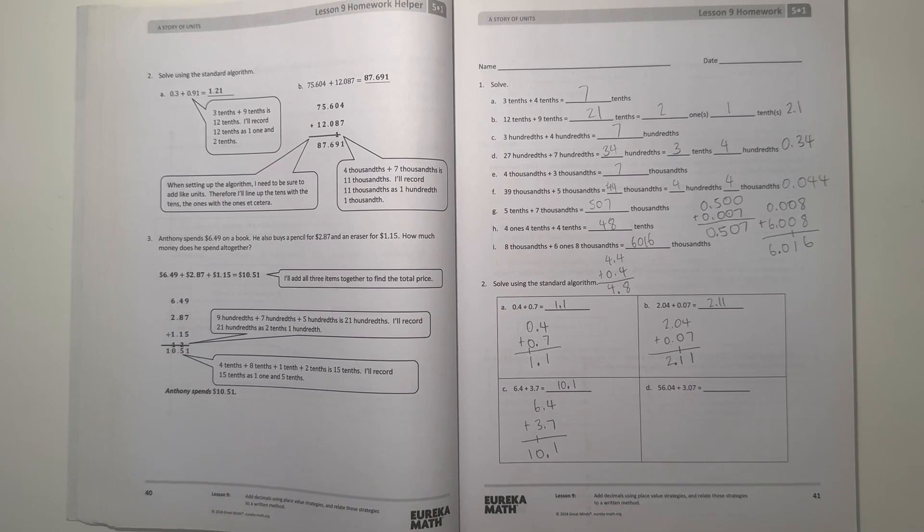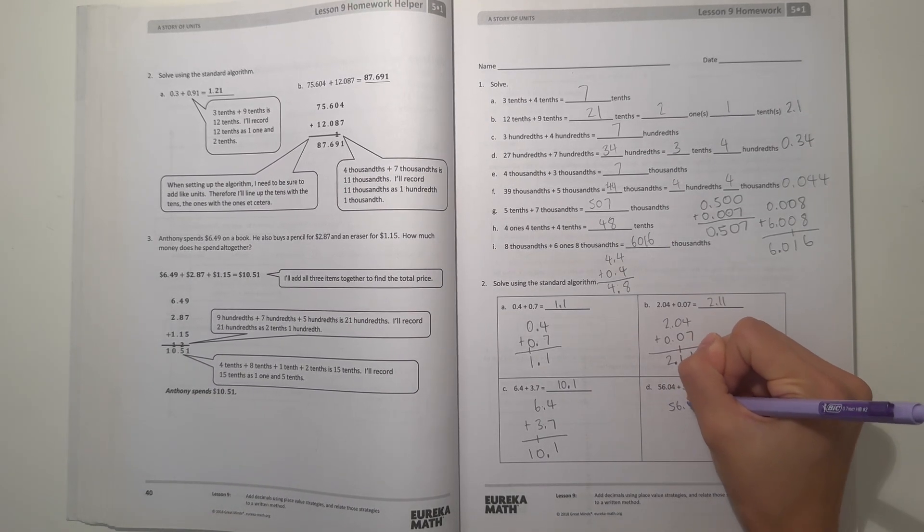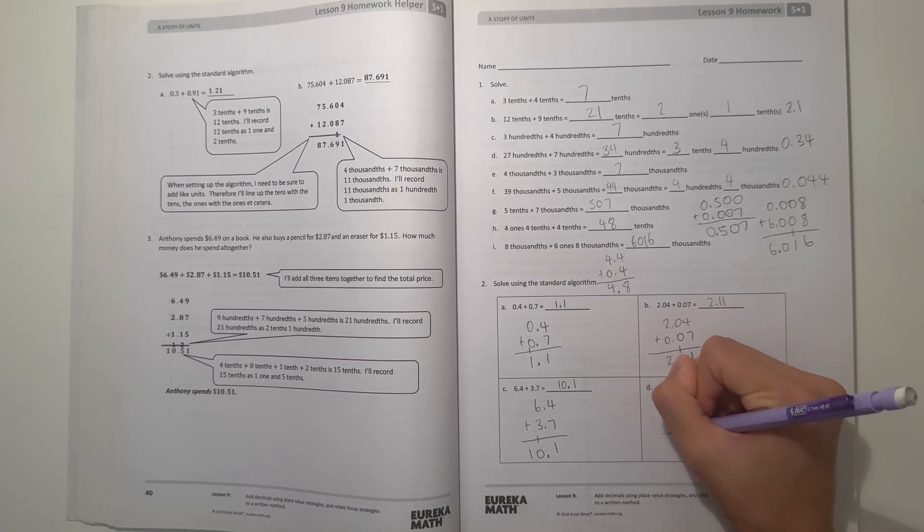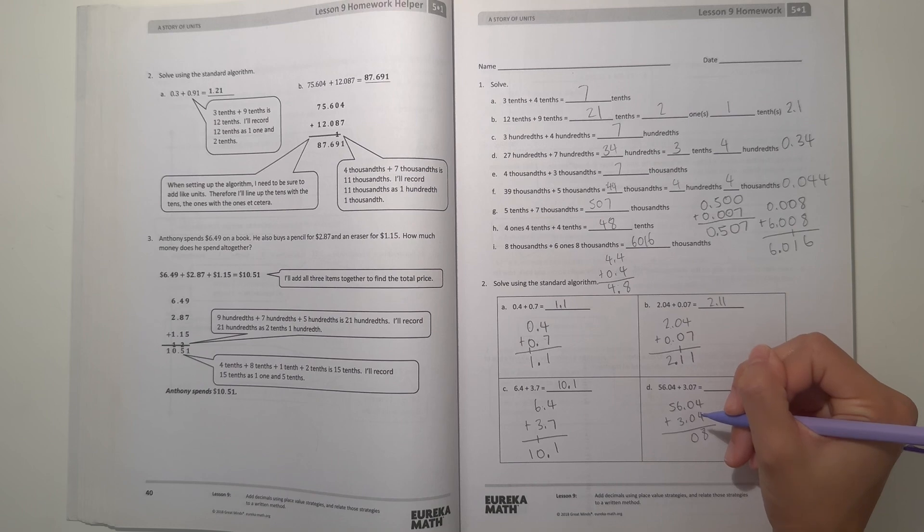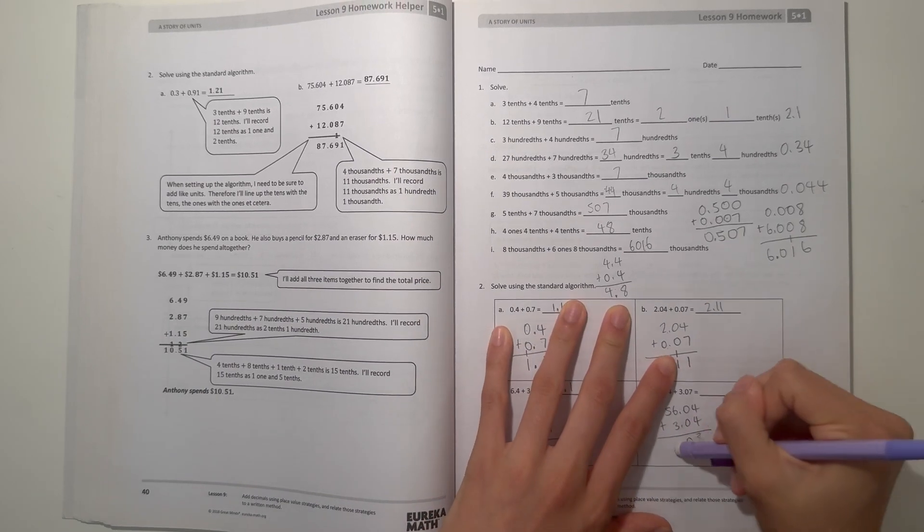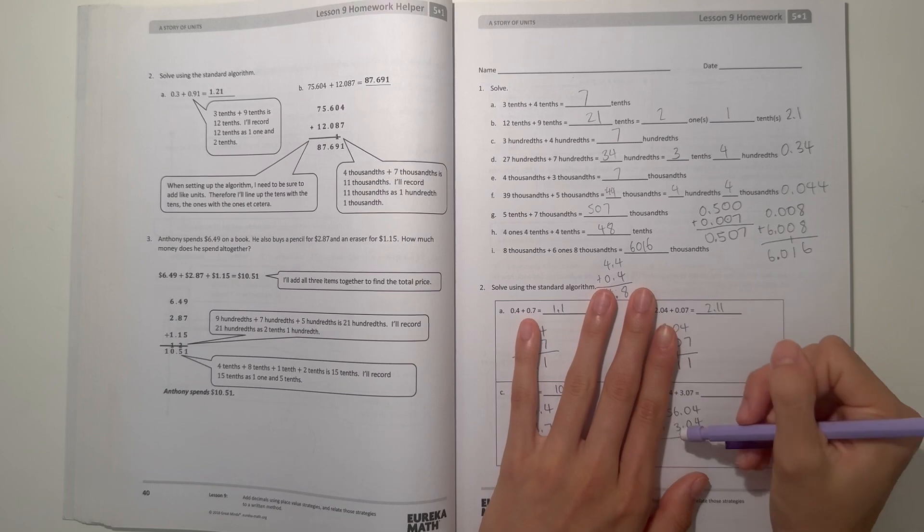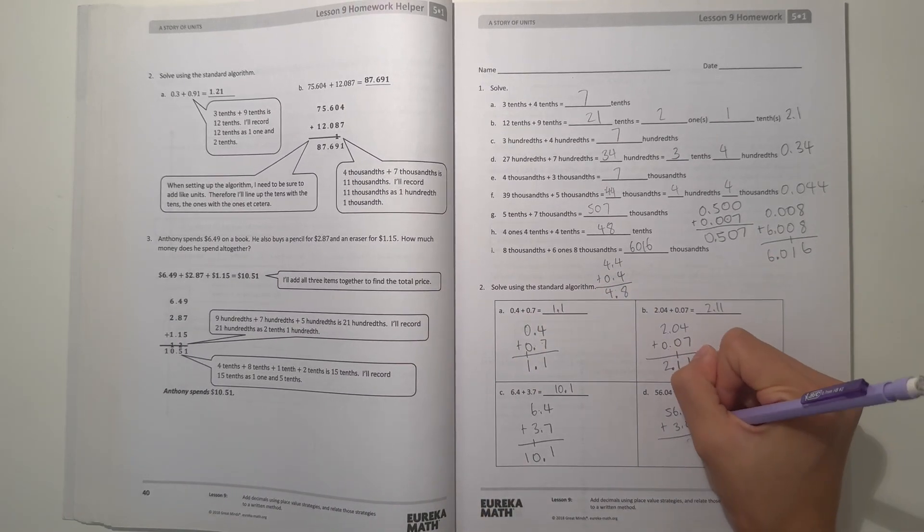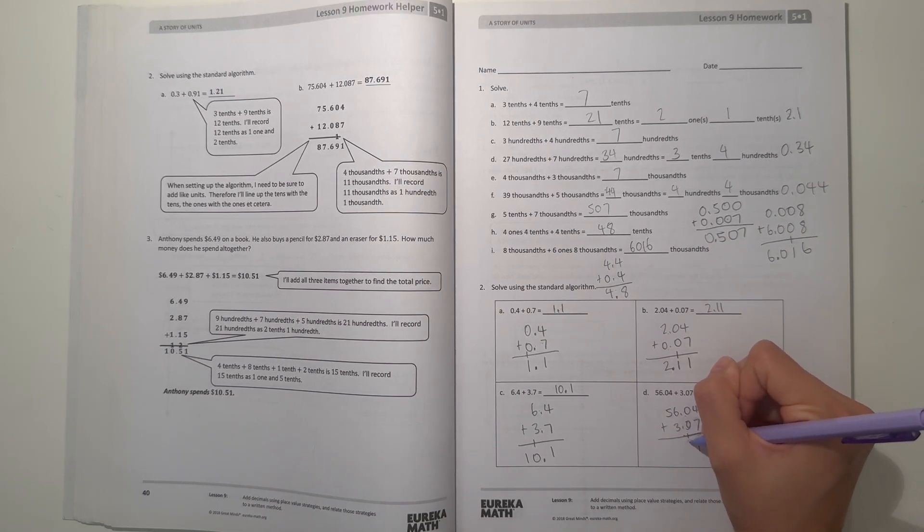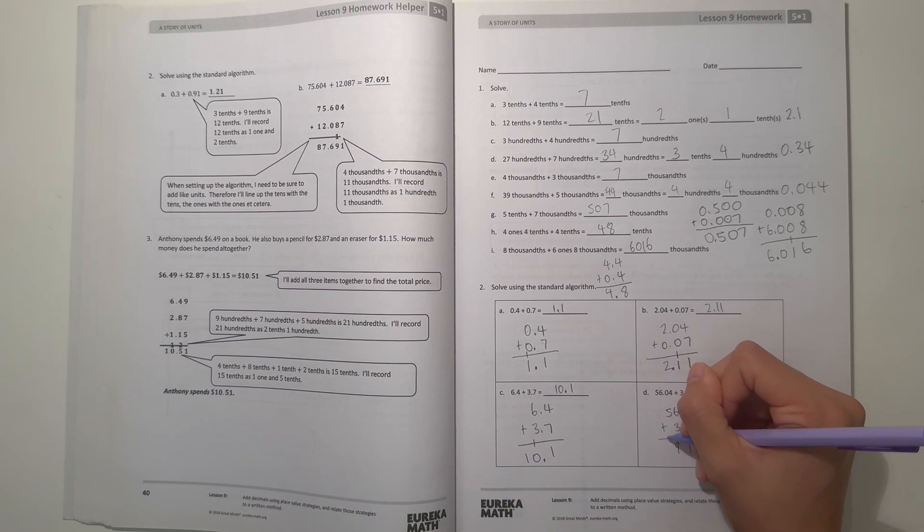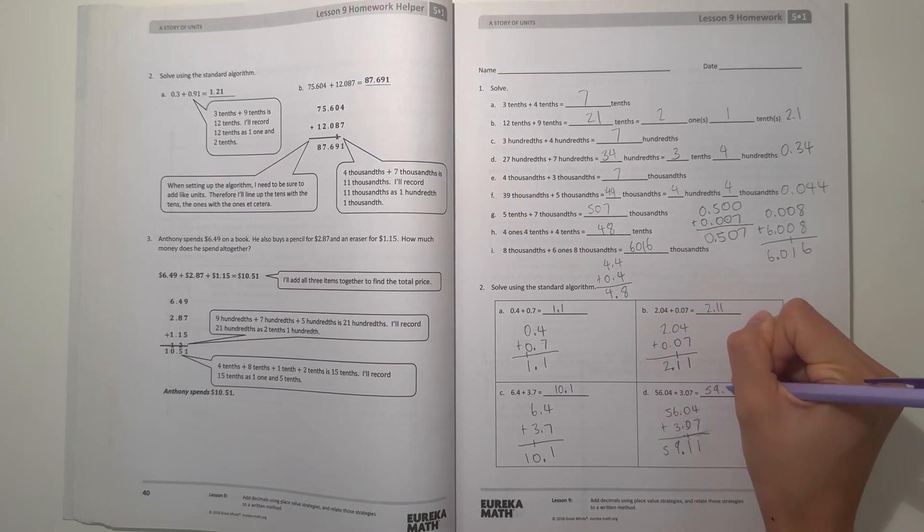Alright, and D, we have 56.04 plus 3.04. 4 plus 4 is 8, 0 plus 0 is 0. Oh, did I? Hold up. Did I write 4? I meant to write 7. 3.07. 4 plus 7 is 11, 0 plus 1 is 1, 6 plus 3 is 9. And then 5 would just be 5. And we can't forget to move the decimal point down. So our answer is 59.11.